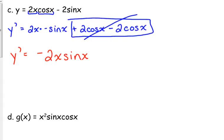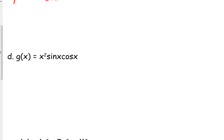So our derivative is simply negative 2x sine of x. That negative with the sine needs to go to the front: it's negative 2x sine of x. Now here's an example of the product rule with three functions: x squared times sine of x times cosine of x.